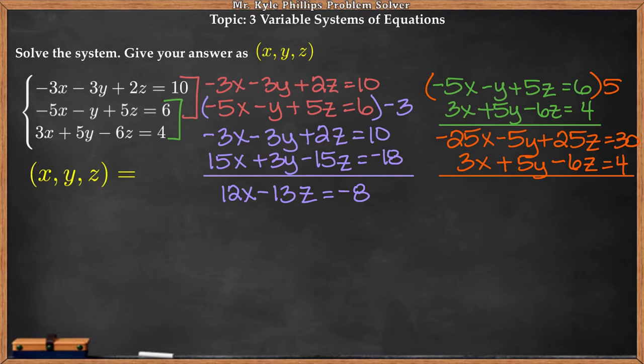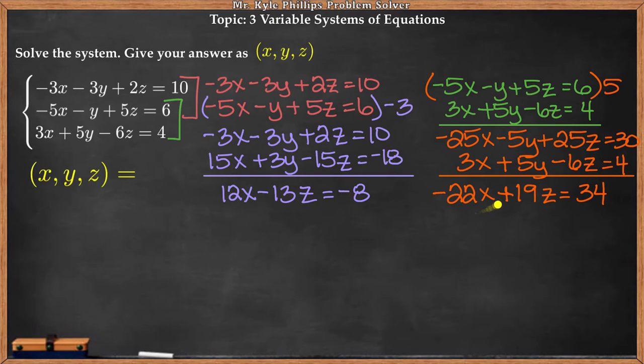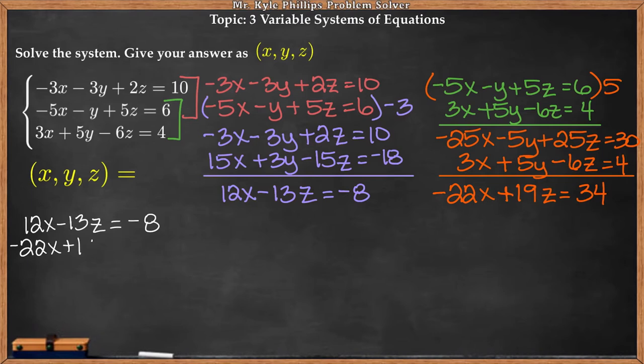Now the y's cancel, giving me negative 22x plus 19z equals 34. Now I have two equations with the same two variables. So I'm going to use these two to write a new system and solve for either x or z. I have 12x minus 13z equals negative 8, and I have negative 22x plus 19z equals 34.